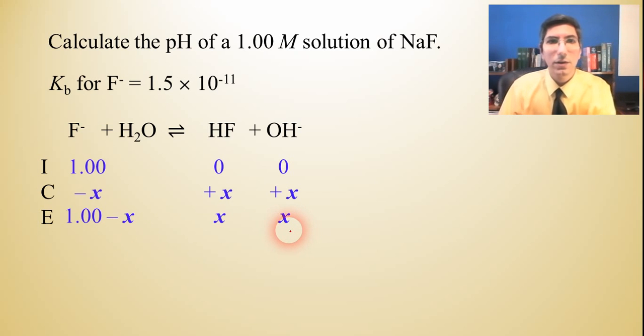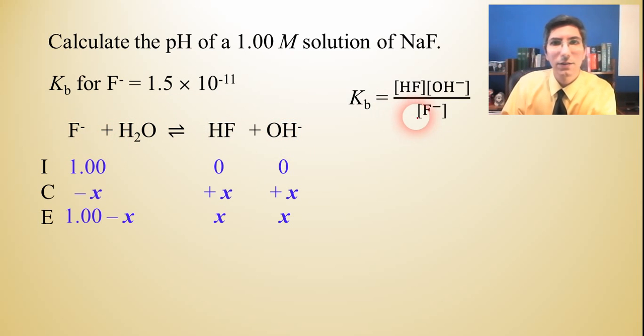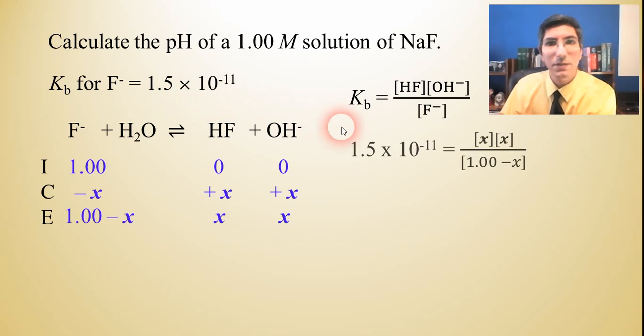Now we can plug these values into our equilibrium constant expression for this reaction. Remember, this is a base. So we're going to write this in terms of Kb. Kb equals the HF concentration times hydroxide concentration all over the fluoride concentration. Notice that we left out water because it's a pure liquid. Don't make the mistake of trying to put water in there and then trying to do something with that. Now we can plug and chug. So we've calculated our Kb. It's 1.5 times 10 to the negative 11th. And that's equal to our X times our X, X squared, all over 1 minus X.